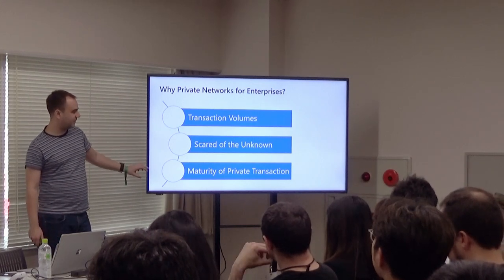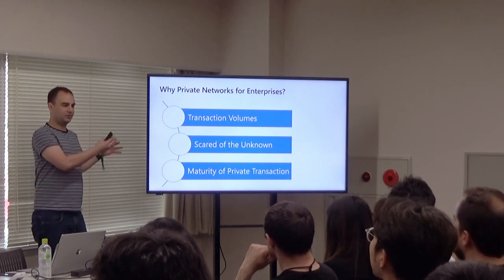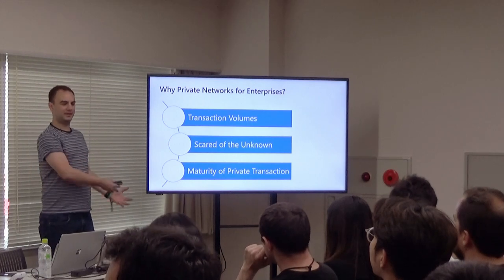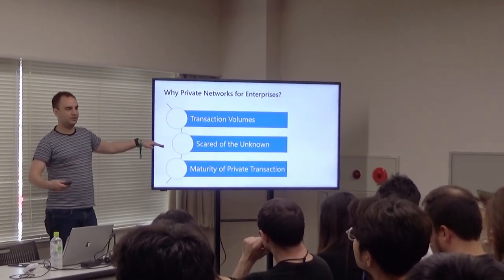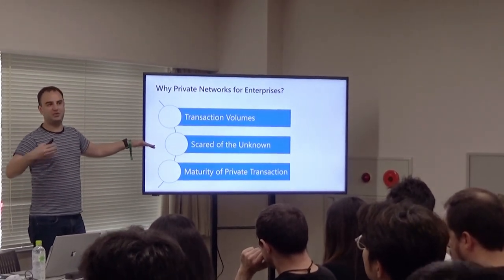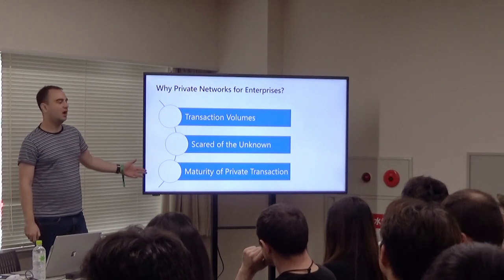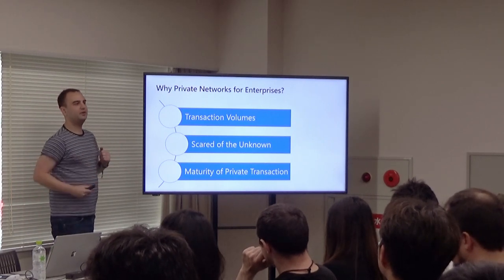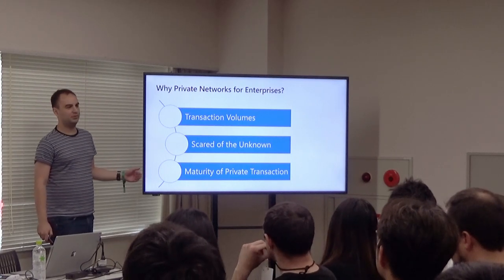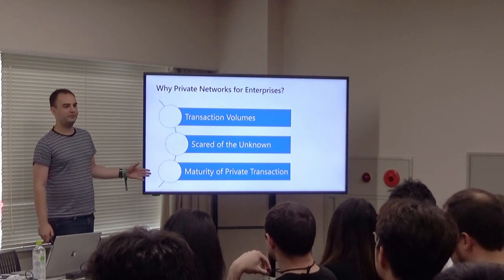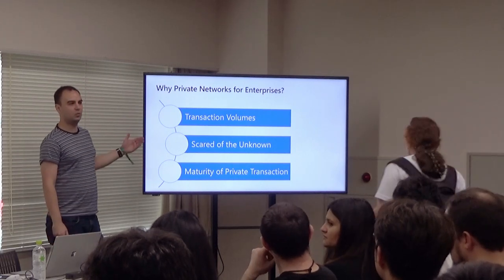Transaction volume is usually not the main reason we end up using a private network. The two main reasons are: first, fear of the unknown — large enterprises want a safe space to deploy things, get developers through the motion of how to build, and then in a few years move into the B2C space. Second, maturity of private transactions — a lot of what enterprises do in B2B is commercially sensitive, and right now in public Ethereum private transactions are harder. There are cool things happening with ZK-Snarks; Ernst & Young just released Nightfall, which we're looking at integrating.